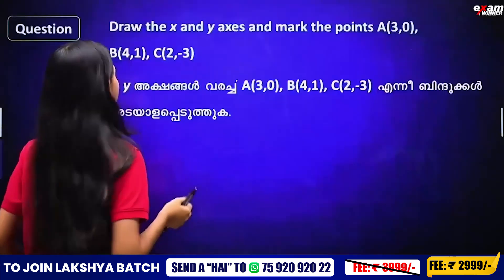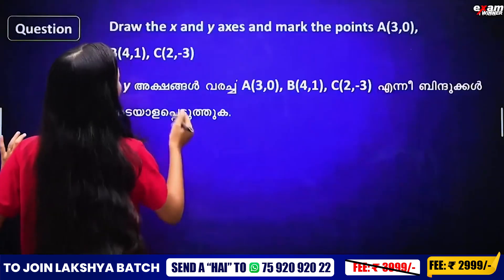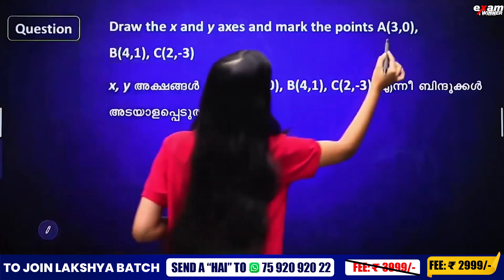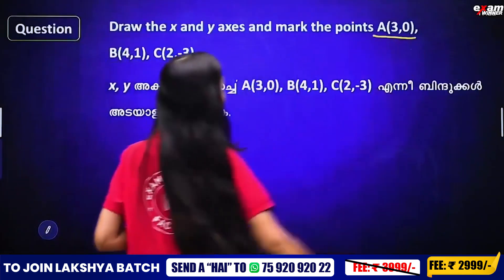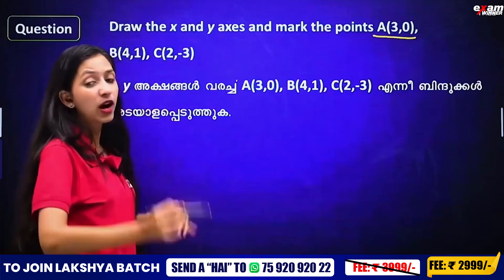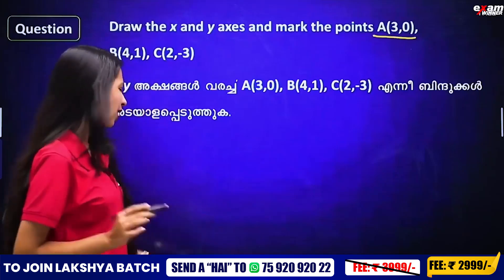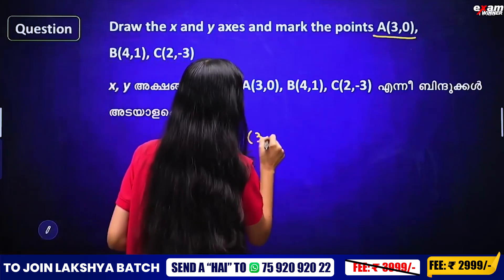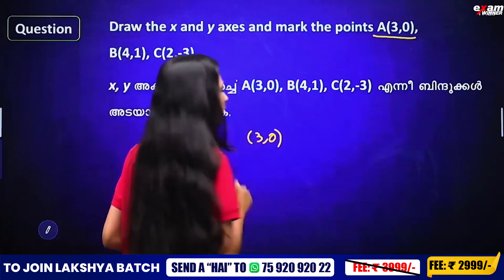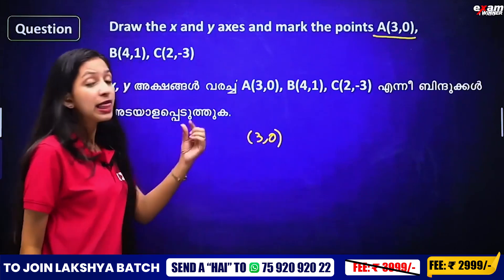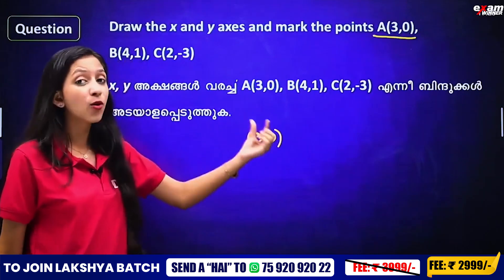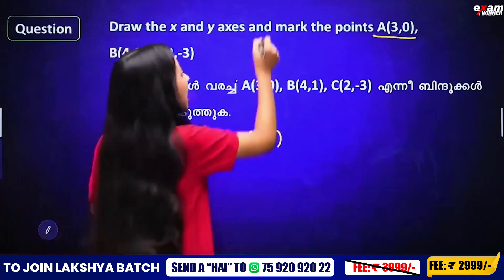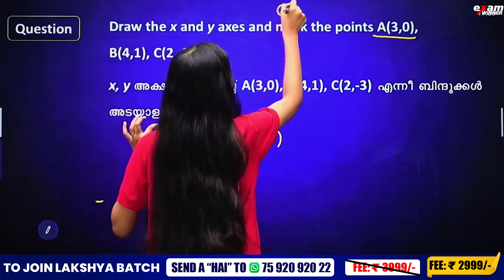We mark the points. Point A is (3, 0). What is the meaning of (3, 0)? What is the meaning of these coordinates? The first number is the x-value and the second is the y-value.